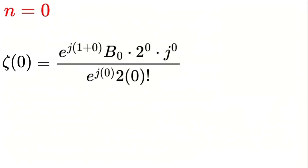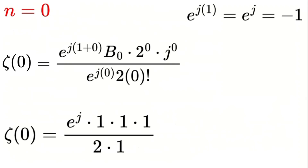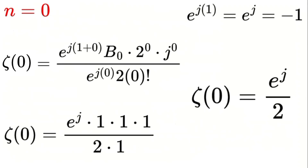Now let's substitute n equals 0 into the formula. Zeta of 0 equals e to the power of j times 0 plus 1, times the Bernoulli number b sub 0, times 2 raised to the power of 0, times j raised to the power of 0, all divided by 2 times 0 factorial. Simplifying: e to the power of j times 1 equals e to the power of j, which equals negative 1. We know b sub 0 equals 1, 2 raised to the power of 0 equals 1, j raised to the power of 0 equals 1, and 0 factorial equals 1. So zeta of 0 equals e to the power of j times 1 times 1 times 1, all divided by 2 times 1, which simplifies to e to the power of j divided by 2. Since e to the power of j equals negative 1, this matches the known value of zeta of 0 equals negative one half.